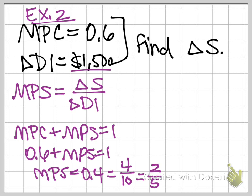Now I'm ready to find my change in savings. I'm going to use this equation here. I know my MPS is 2 fifths, so 2 fifths equals my change in savings, my unknown, divided by this change in disposable income of 1,500.